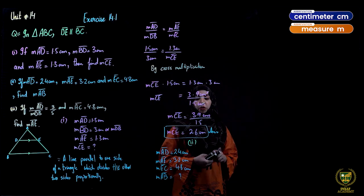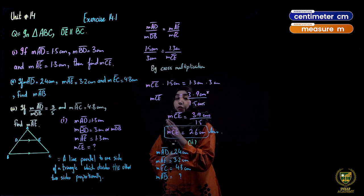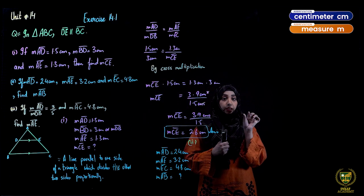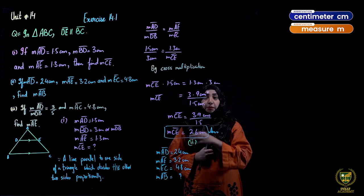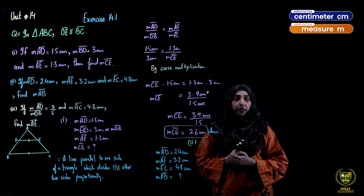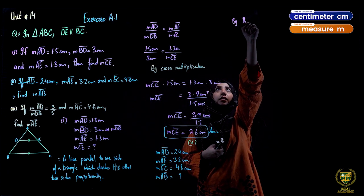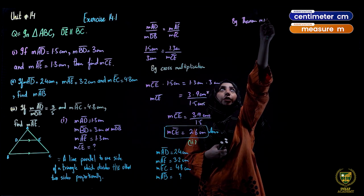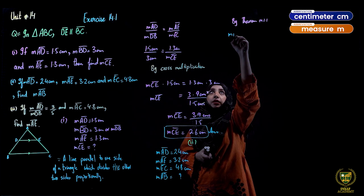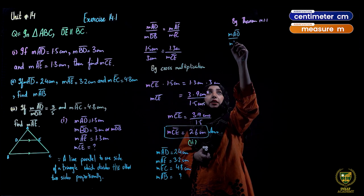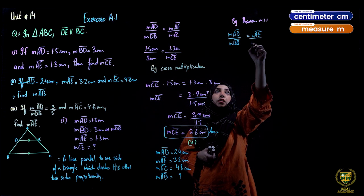Same theorem will be applied. Rather than writing the full statement again, we mention: by Theorem 14.1.1. You should always write the statement. By the theorem: measure AD upon measure DB equals measure AE upon measure EC.